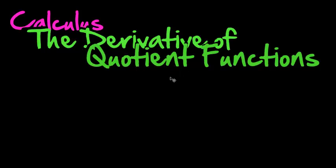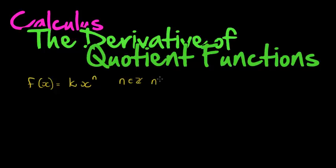In our last video we looked at the derivative of power functions. A power function looks like this: f is equal to some coefficient k times x to the power of n, where n is an integer and n is greater than or equal to zero — in other words, a counting number.